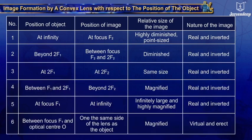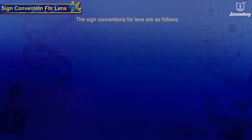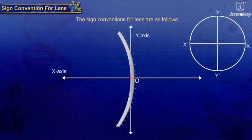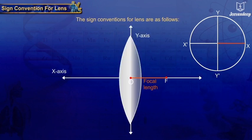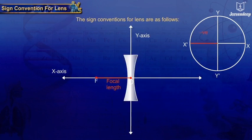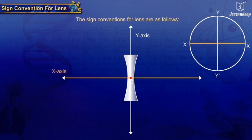Sign conventions for lens: The sign conventions for lens are similar to those for spherical mirrors. The focal length of a convex lens is positive and that of a concave lens is negative. The optical center of the lens is taken as the origin and the principal axis is taken as the x-axis.